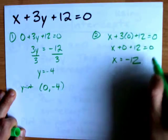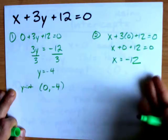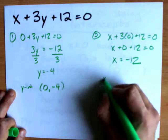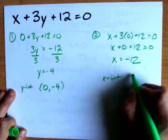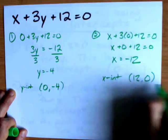It's minus 12 on the other side of the equal sign, just like it was over here. And I have x equals negative 12. That means my x-intercept is (-12, 0).